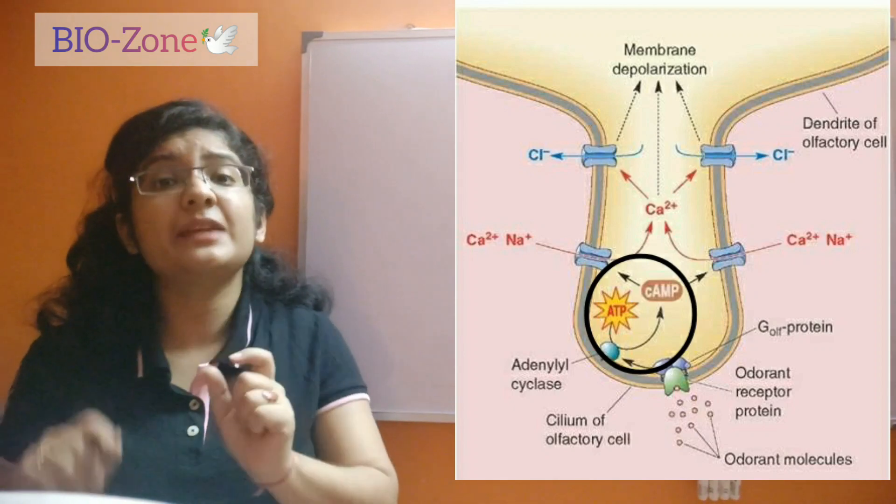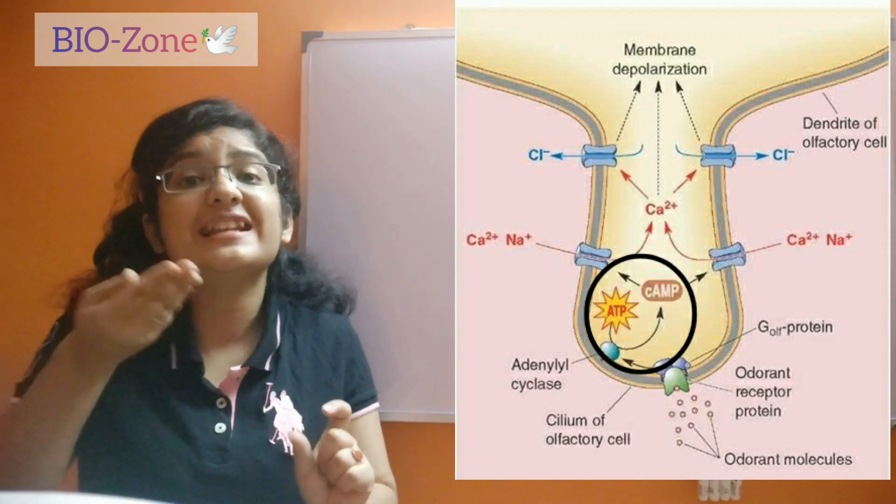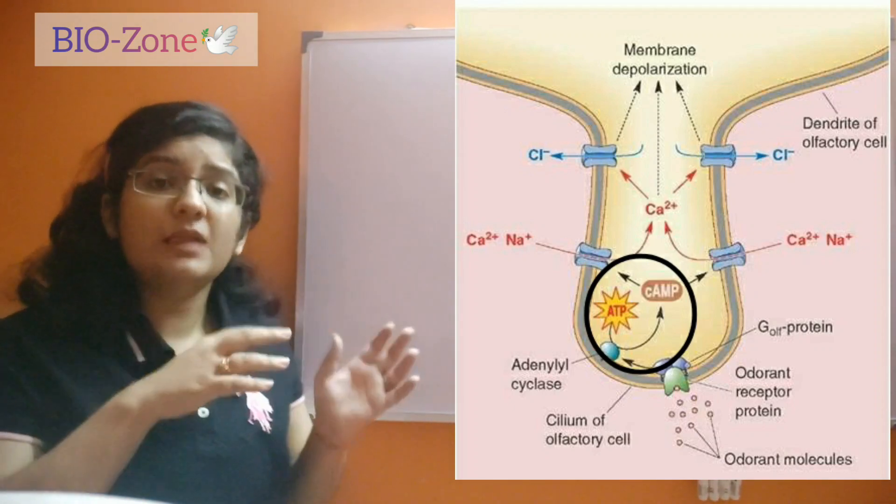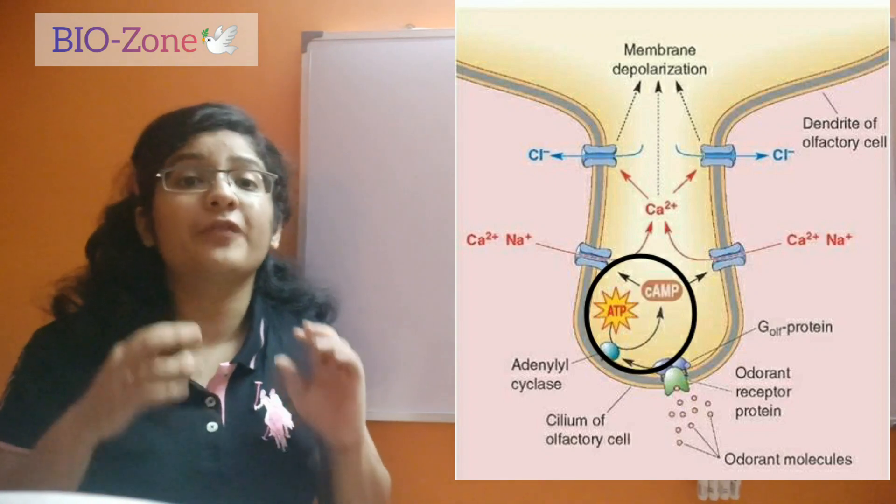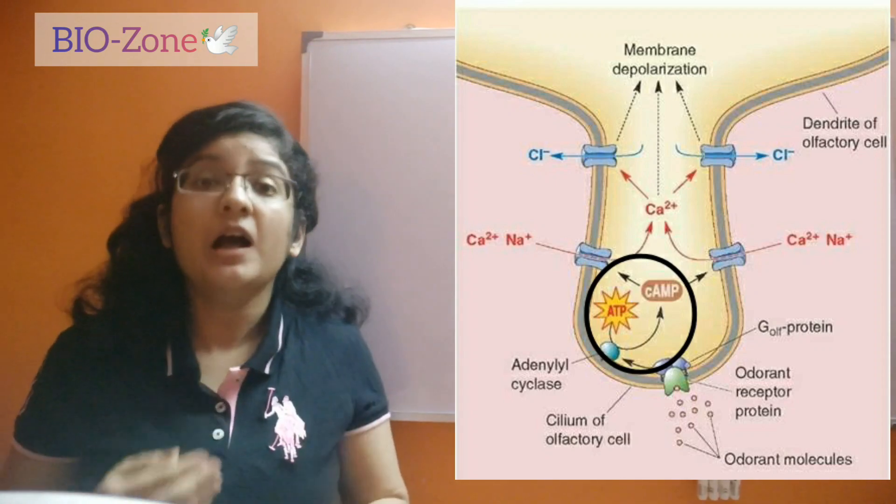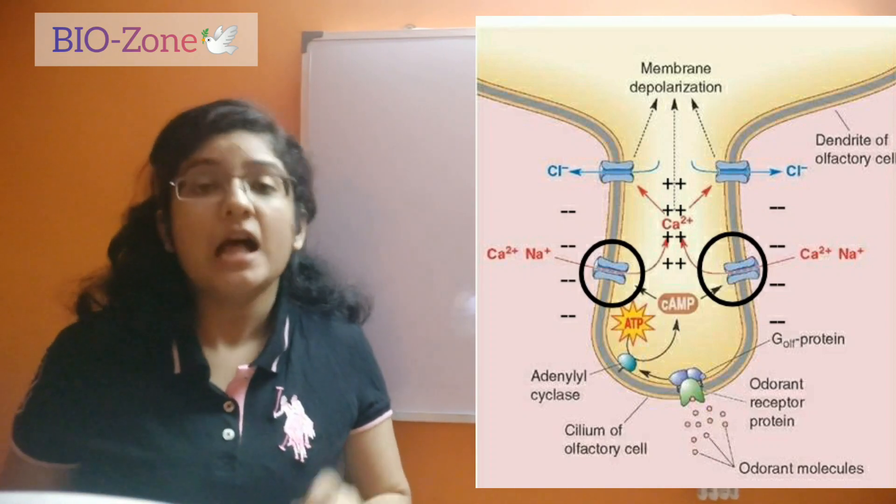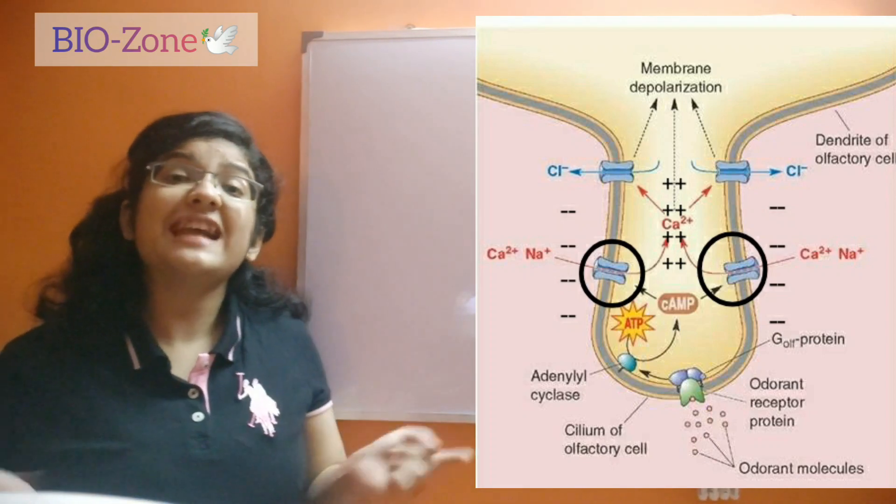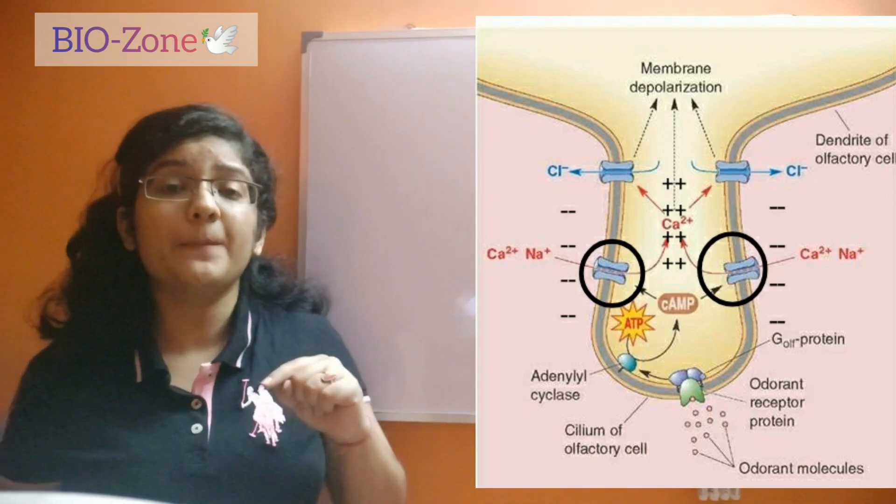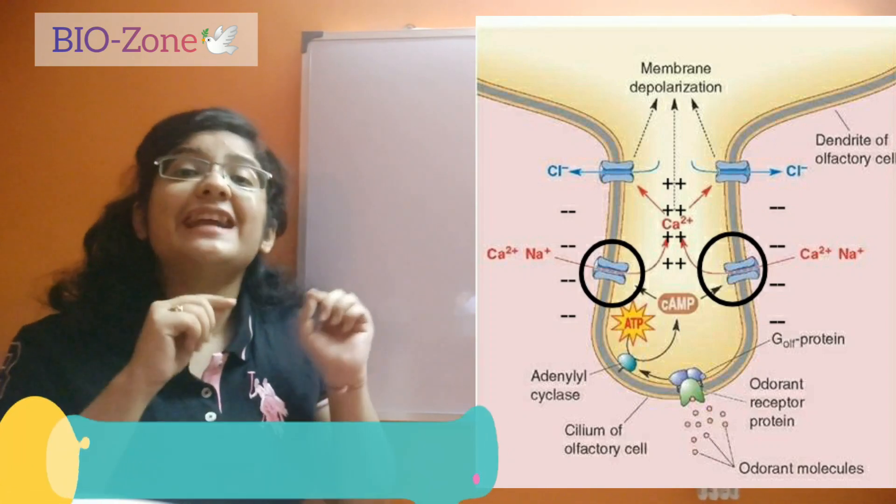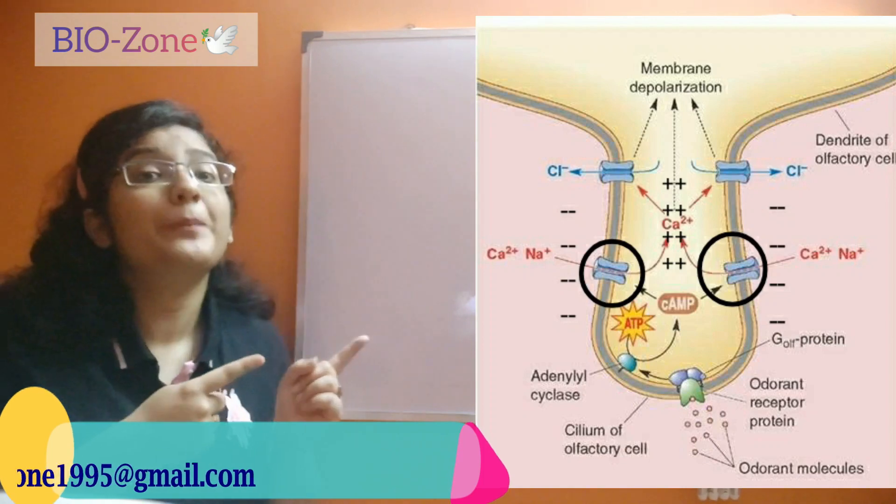This cyclic AMP concentration rises inside the cell body, that is the receptor cell of our olfactory mucosa, which causes activation of another set of cationic channels. This cationic channel causes influx of sodium and calcium inside the cell, which you can see in the picture.